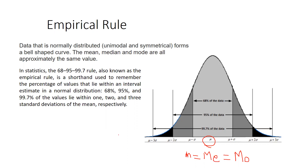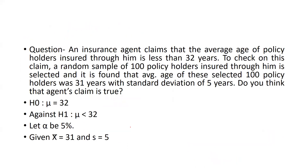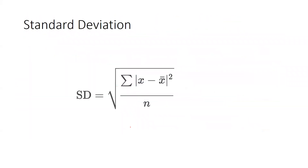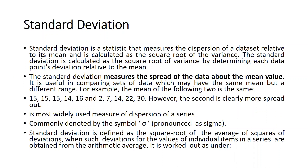Before covering the 68%, 95%, and 99.7%, I want to explain what standard deviation means and how to calculate it. Standard deviation is a statistic that measures the dispersion of a data set relative to its mean, and is calculated as the square root of the variance — by determining each data point's deviation relative to the mean.